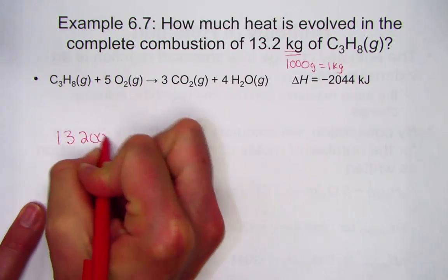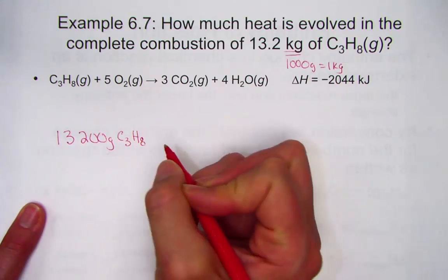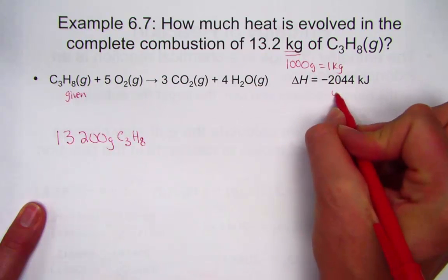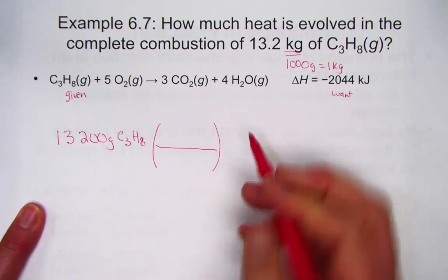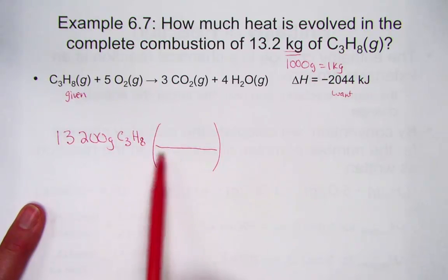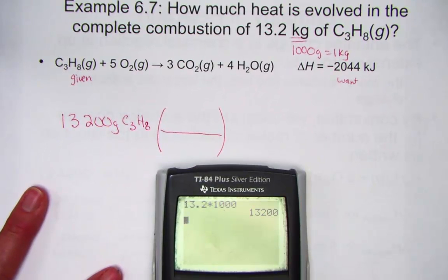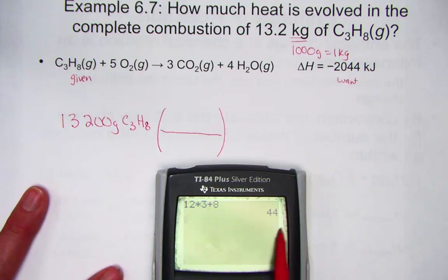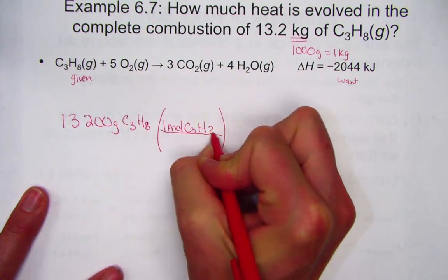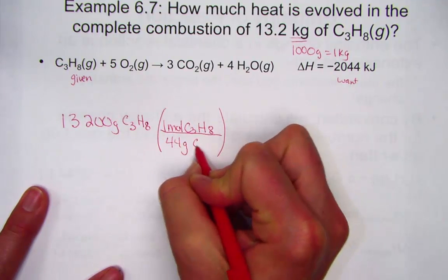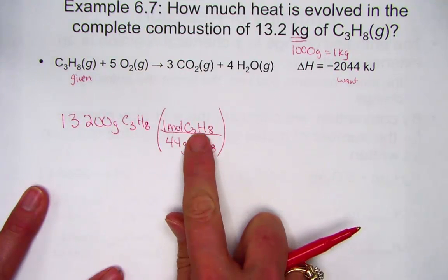We start with 13,200 grams of propane, C₃H₈ — that's our given. We want to find kilojoules of heat. Coefficients stand for mole numbers, not mass values, so we need the molar mass of propane. Carbon has a weight of 12, and there are three in the formula — 12 × 3. Hydrogen has a weight of 1, with eight in the formula. The molar mass of propane is 44 grams per mole, so 1 mole of C₃H₈ weighs 44 grams. The gram units cancel, bringing us into moles.